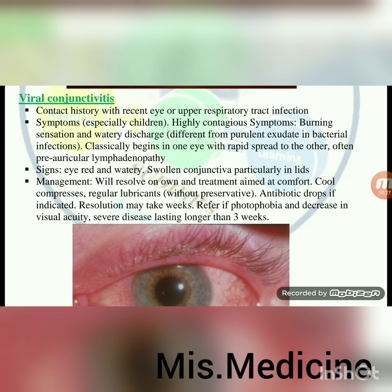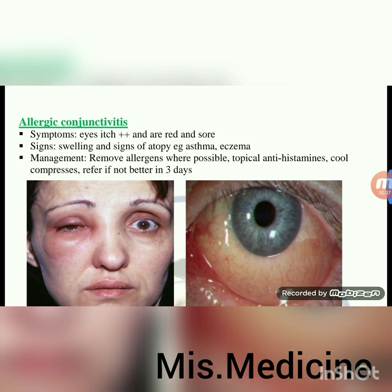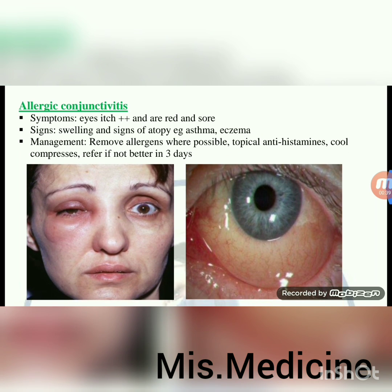Refer for viral conjunctivitis if photophobia and decrease in visual acuity, or severe disease lasting longer than 3 weeks. Allergic conjunctivitis — symptoms: eyes itch and are red and sore. Signs: swelling and signs of atopy like asthma or eczema. Management: remove allergens where possible, topical antihistamines, cool compresses; refer if not better in 3 days.